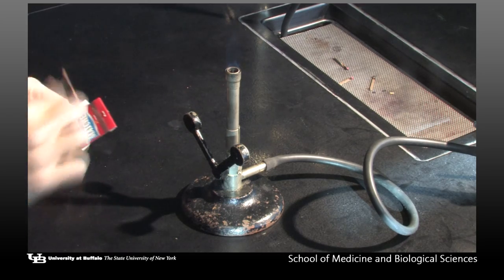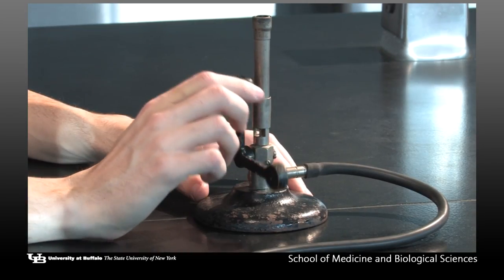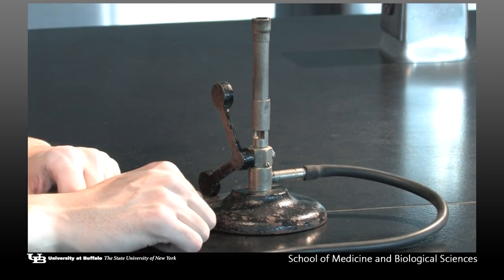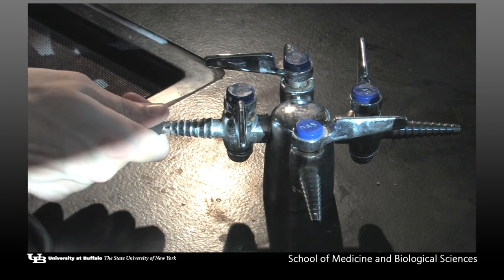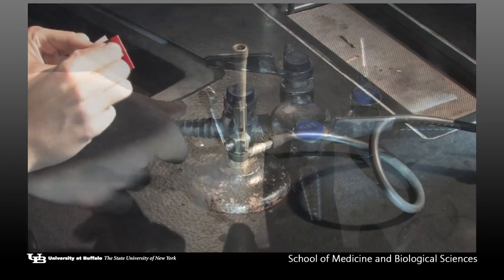When the Bunsen burner is not in use, the flame may be lowered using the lever at the bottom. Attach the hose of the Bunsen burner to the gas jet. Turn the gas on and light the burner with a match.